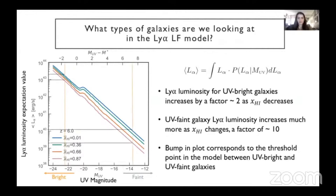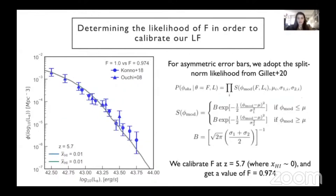UV faint galaxies, which show a larger increase, typically exist in less dense IGM regions with fewer galaxies that don't reionize until much later, and they're more neutral than the dense regions where bright galaxies live. We estimate our fudge factor F by maximizing our defined likelihood from our model at redshift 5.7 and a neutral fraction of about 0 — assuming it is after the occurrence of ionization. We remarkably obtain a value for F of 0.974, which is then used for all Lyman-alpha luminosity functions at all redshifts and neutral fraction values.